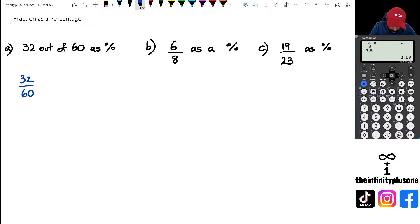So 32 out of 60 we want to convert this to a percentage. Remember, anytime you want to convert a fraction into a percentage, all you have to do is multiply by 100.